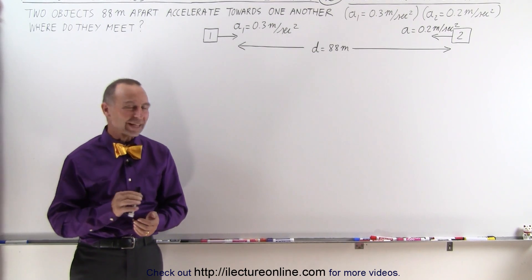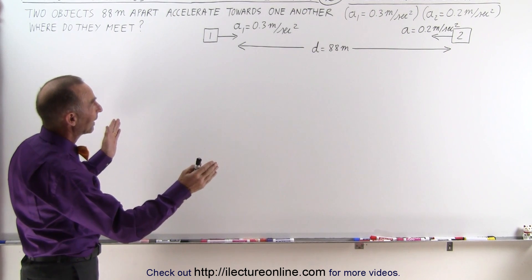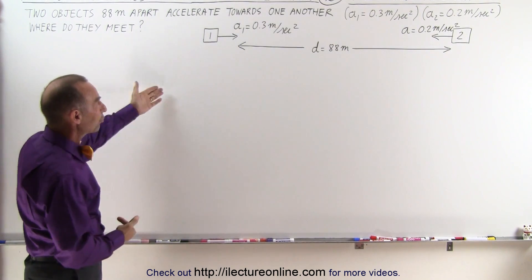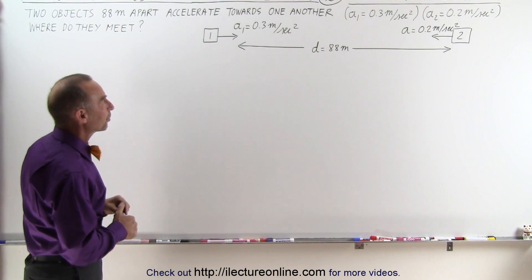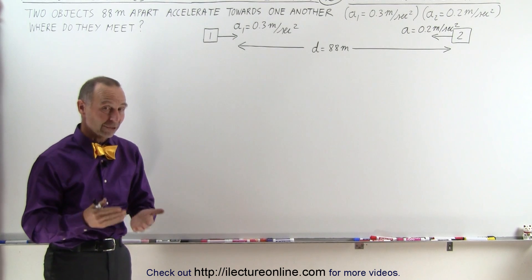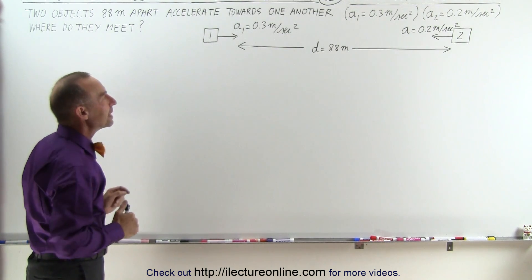Welcome to ElectronLine. Our second example has two objects starting from rest 88 meters apart traveling towards each other, with the left one accelerating at 0.3 meters per second squared and the one on the right with an acceleration of 0.2 meters per second squared. The question is, where will they meet?